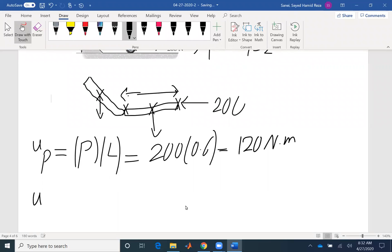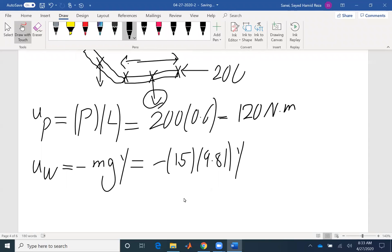The work of the weight: for the work of the weight, we'll look at the center of gravity. We can see that is negative because the force is acting downward and the displacement is upward. The mass is 15, g is 9.81, and then we need to find Y value. If this distance is 0.6, half of that would be 0.3. This angle is 45, and the center of gravity has moved Y, so that would be 0.3 sine 45.